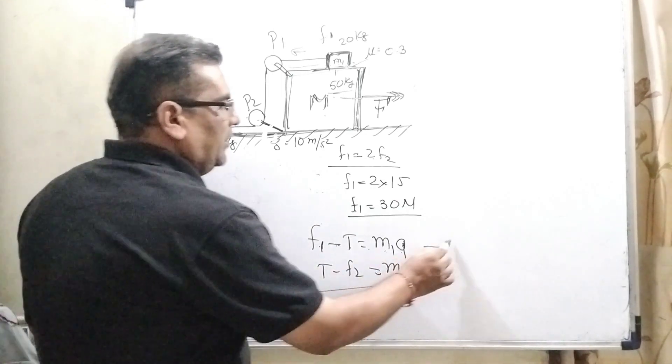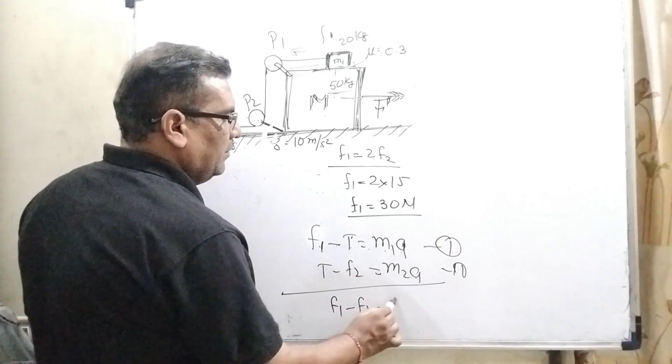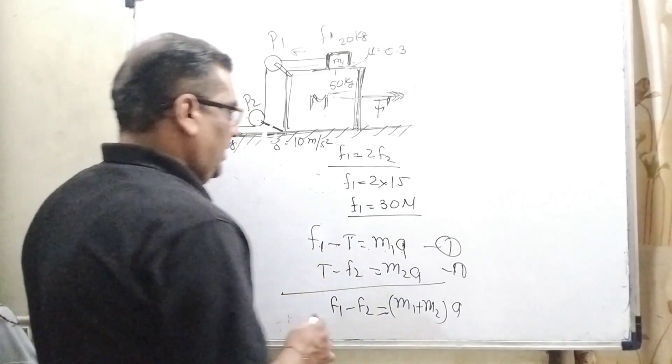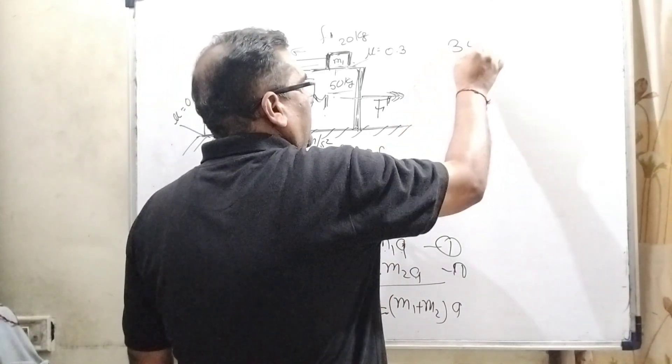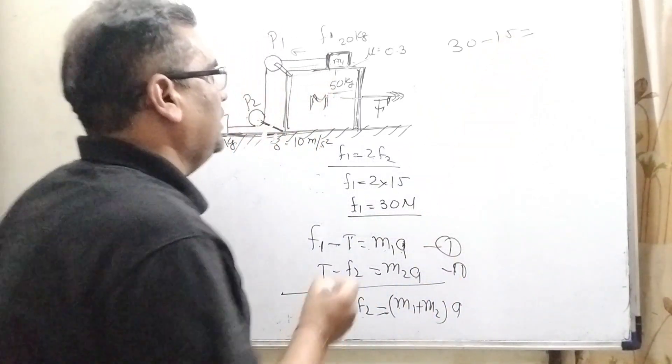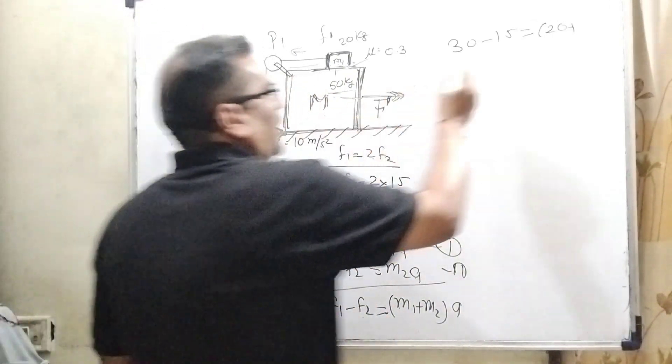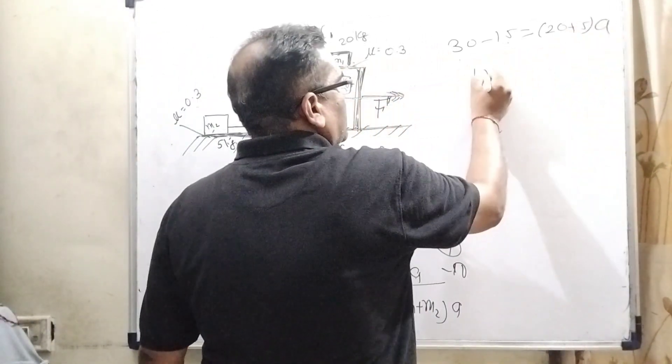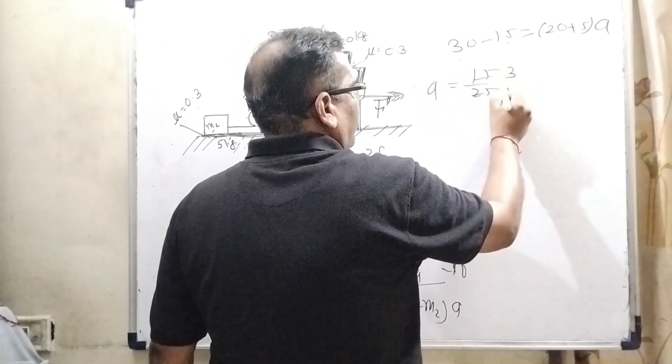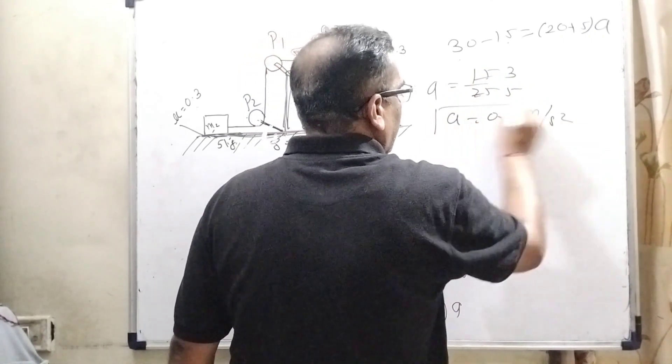So now solving this question first and second equation then T will cancel out. F1 minus F2 equal to M1 plus M2 into a. What is F1? F1 is 30. Here F2 is 15 and mass of M1 is 20 kilogram and mass of M2 is 5 kilogram and acceleration. This is 15 by 25 equal to a. 5 is 15, 5 is 25 means 0.6 meter per second square. It is the acceleration.